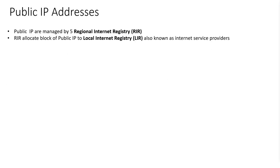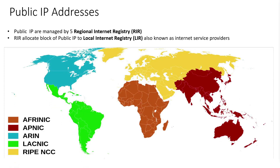Hello. In this session, we will talk about public IP addresses. Public IPs are managed by five regional internet registries. Regional internet registries allocate blocks of public IP to local internet registries, also known as internet service providers. Here in this map, you have the five regional internet registries that handle public IP around the world.